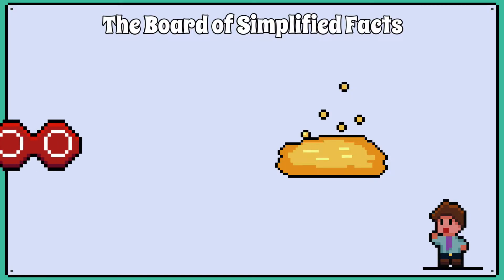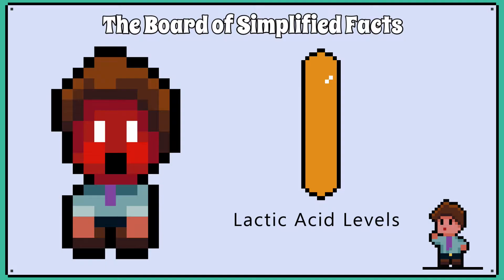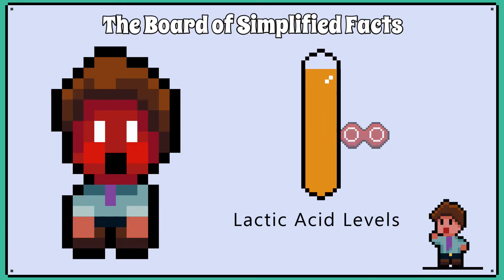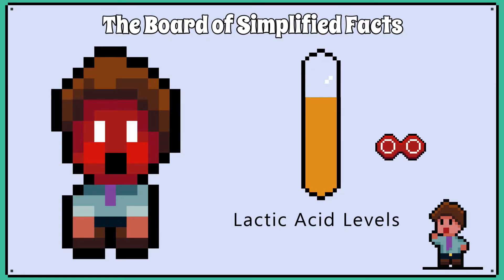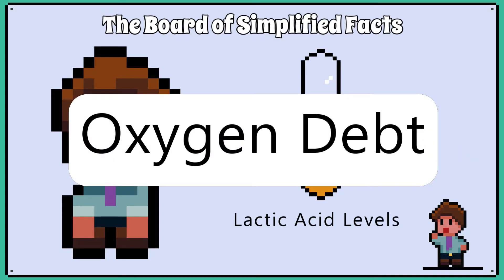The trouble is, you need oxygen to break down lactic acid. So, at some point, your body gives up exercising because the lactic acid buildup is too high. Once you stop exercising, the body still needs to use up extra oxygen to break down the lactic acid. We call this an oxygen debt.